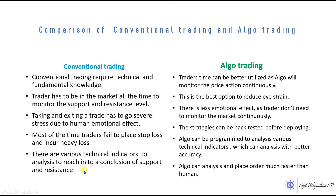Another aspect is there are various technical indicators to analyze to reach a conclusion whether this is a right support or resistance. We analyze moving averages, trend lines, Fibonacci support and resistance, Fibonacci ratios, Gann angles, and other indicators like PCR, open interest, and volume. There are various indicators you have to analyze to reach the conclusion that it is a right support or resistance.